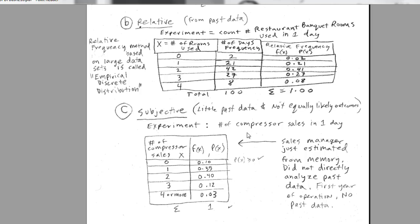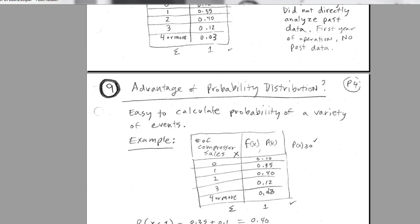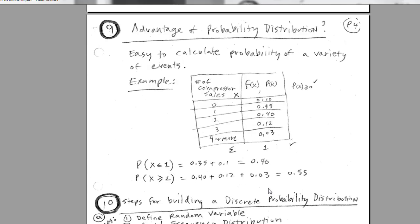Now, the big advantage of frequency distributions, as we've already mentioned in this video and last chapter, once you have a frequency distribution, it's easy to calculate probability of a variety of events. So we could ask the probability that number of compressors sold is less than or equal to 1. We simply look up here, add 0 and 1. Probability that we sell two or more compressors, we look up here, add 2, 3, and 4 or more.